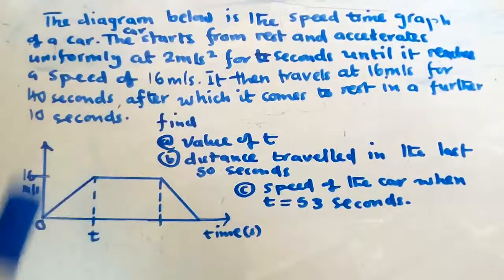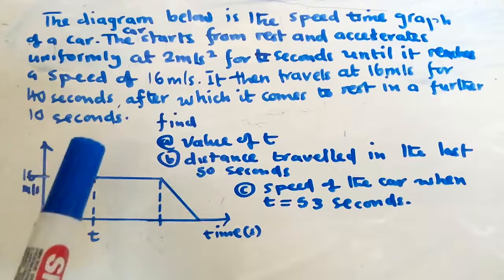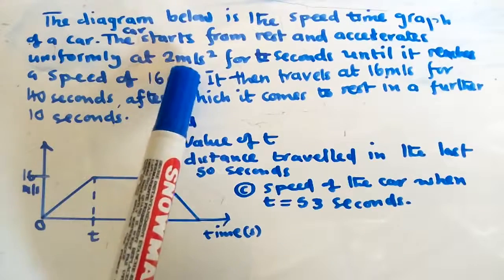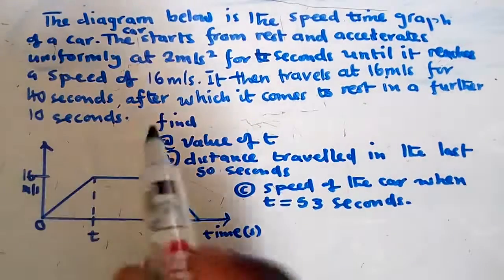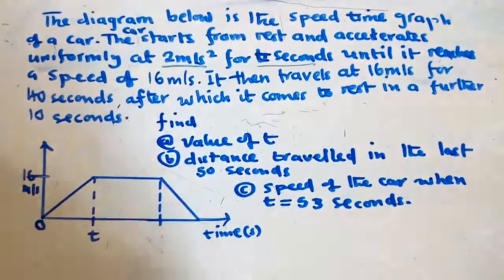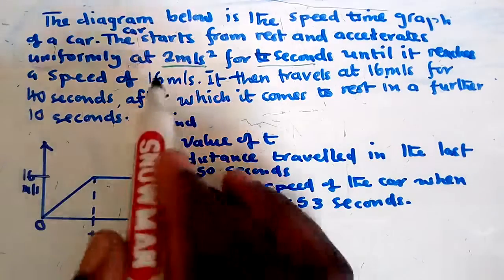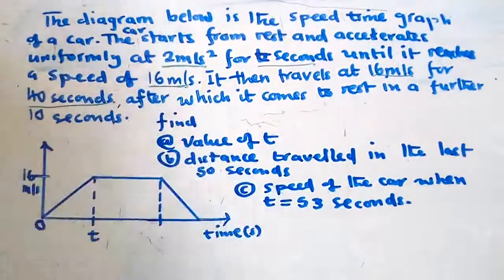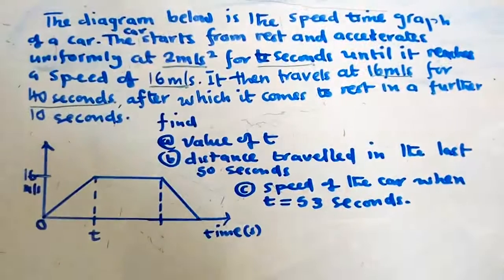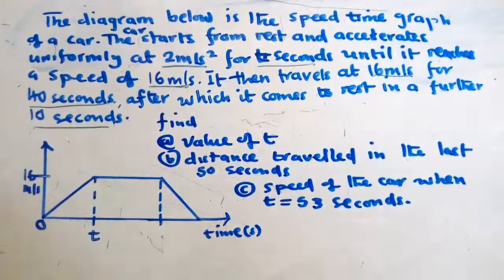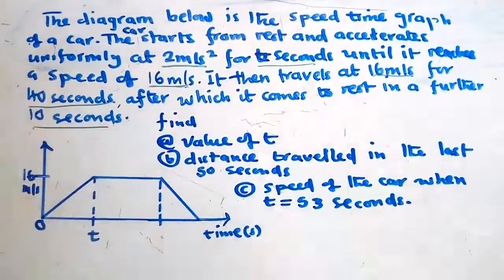We've been given the speed-time graph and the question states: the car starts from rest and accelerates uniformly at 2 meters per second squared for two seconds until it reaches a speed of 16 meters per second. It then travels at 16 meters per second for 40 seconds, after which it comes to rest in a further 10 seconds.